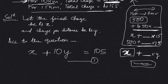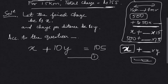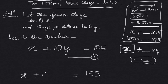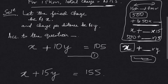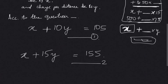The second condition is: for 15 kilometers, the total charge is Rs. 155. So fixed charge x plus 15 kilometers into y equals 155. That gives us: x + 15y = 155. This is equation two.